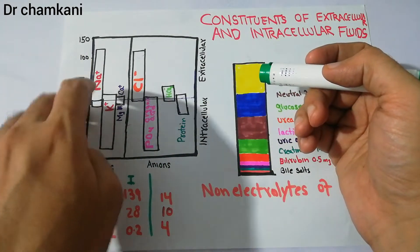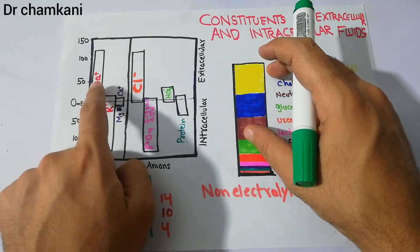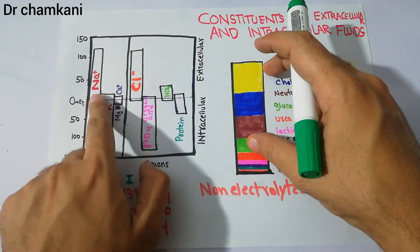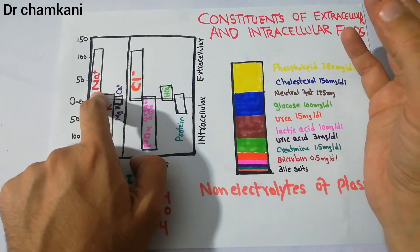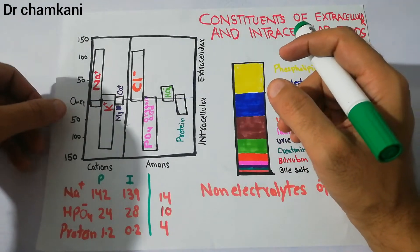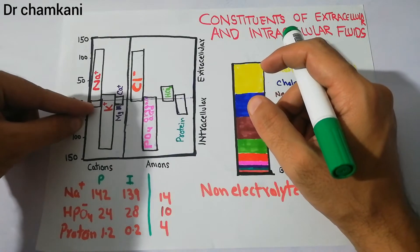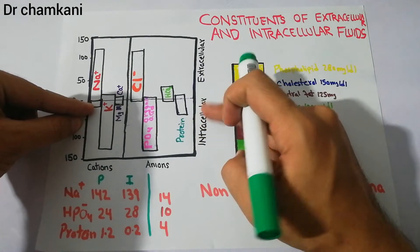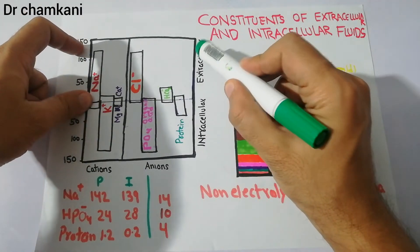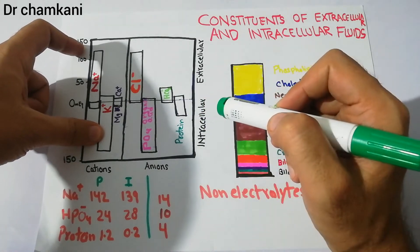First, we will talk about sodium and potassium. The concentration of sodium outside the cell in the extracellular fluid is higher — it is around 142 milliequivalents per liter. But the concentration of sodium inside the cell in the intracellular fluid is very much less. So sodium is present in higher concentration in the extracellular fluid and in lower concentration in the intracellular fluid.